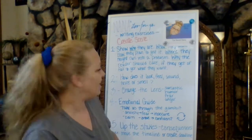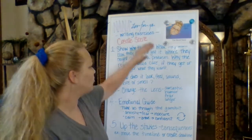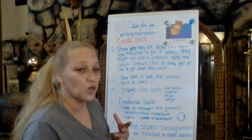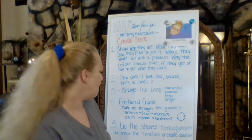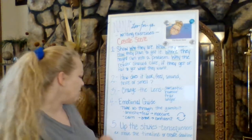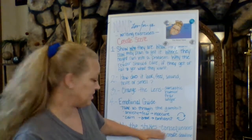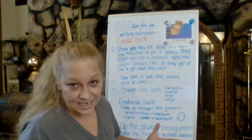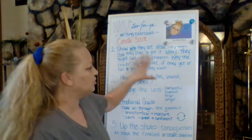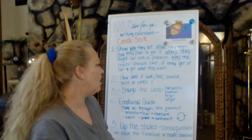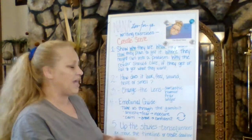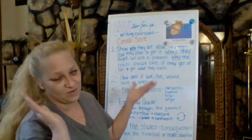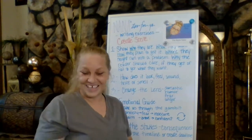And the last one: for the original scene — it's a writing exercise, just a prompt. Once you've created your scene, you can use these things to really play with that scene, work with it, mold it, shape it, and change it. Number five was up the stakes or the consequences. As an example, you might move the timeline or create a deadline for when your character has to do something — maybe they've got to figure something out within 30 minutes, or before dinner time, or before whatever the case.